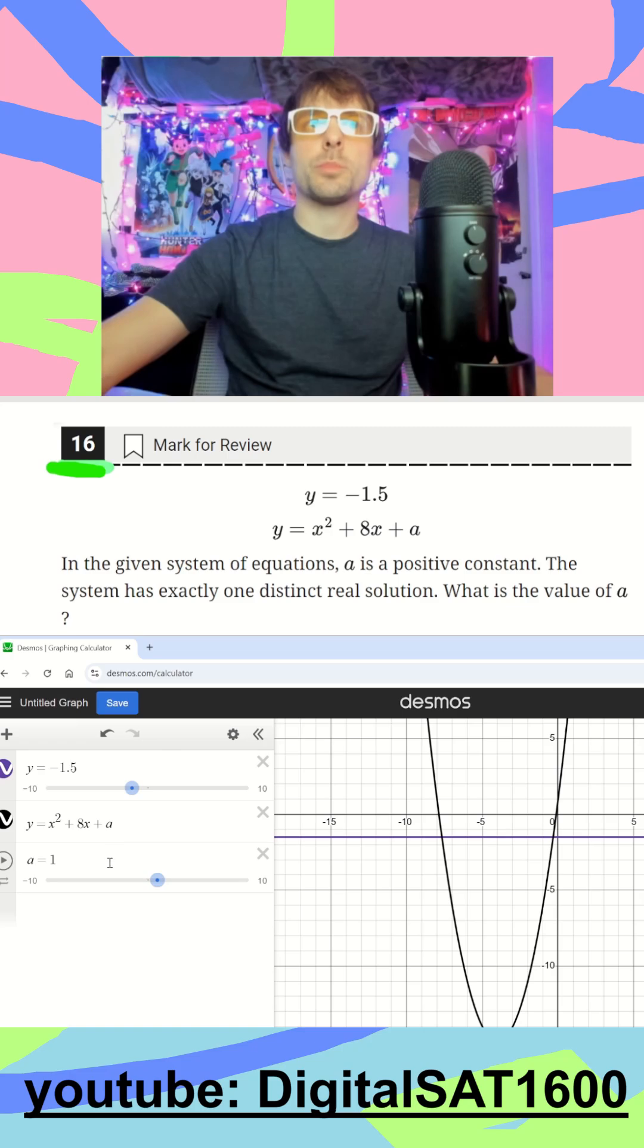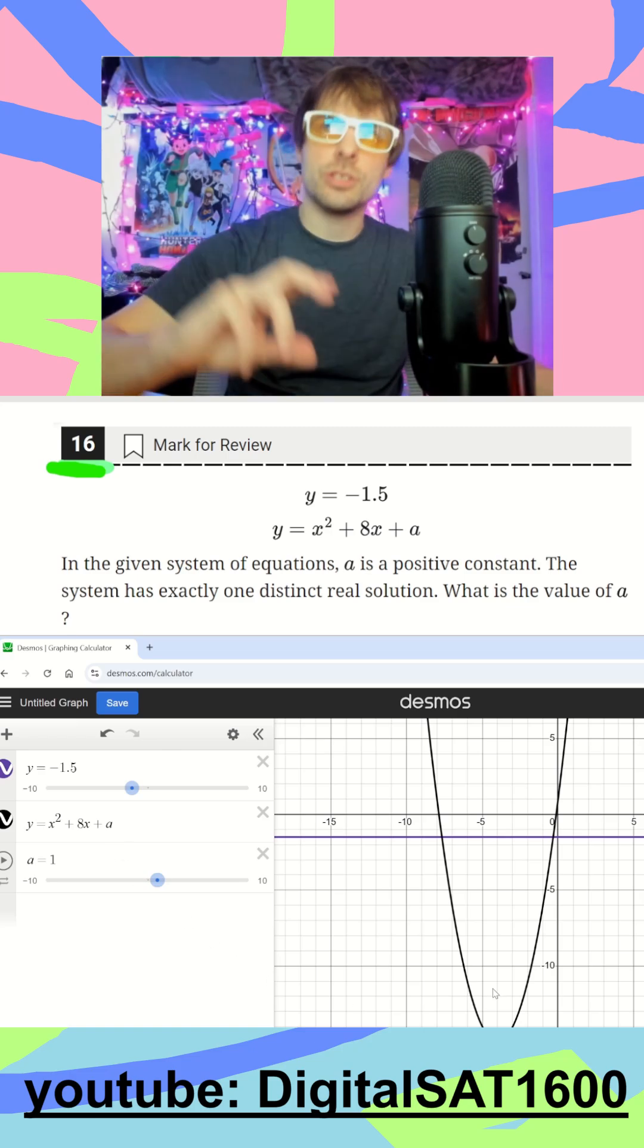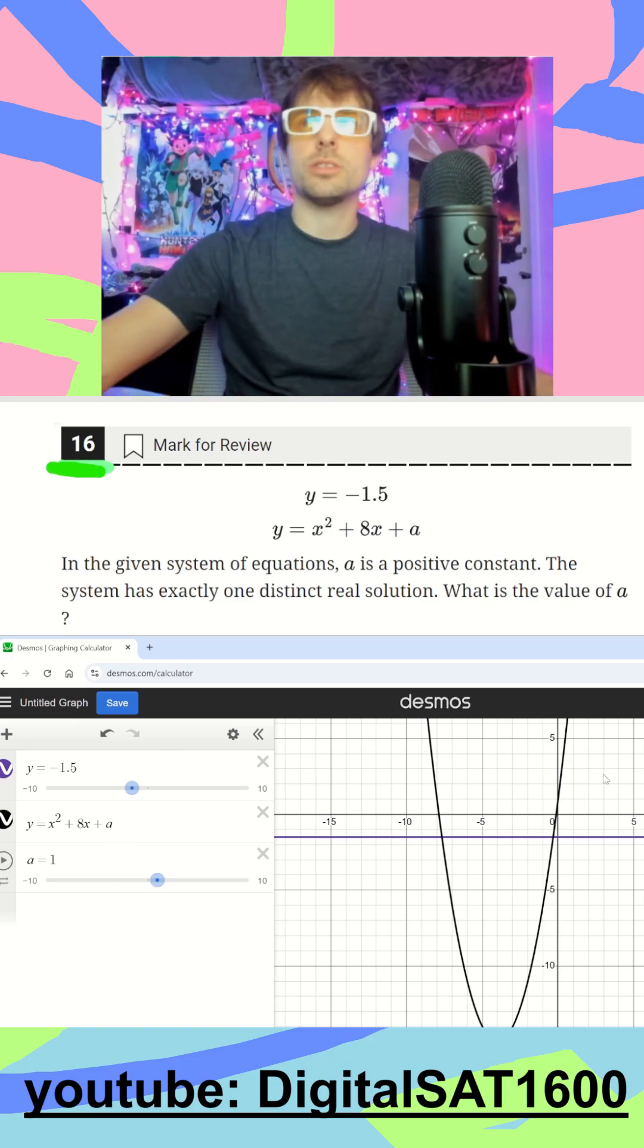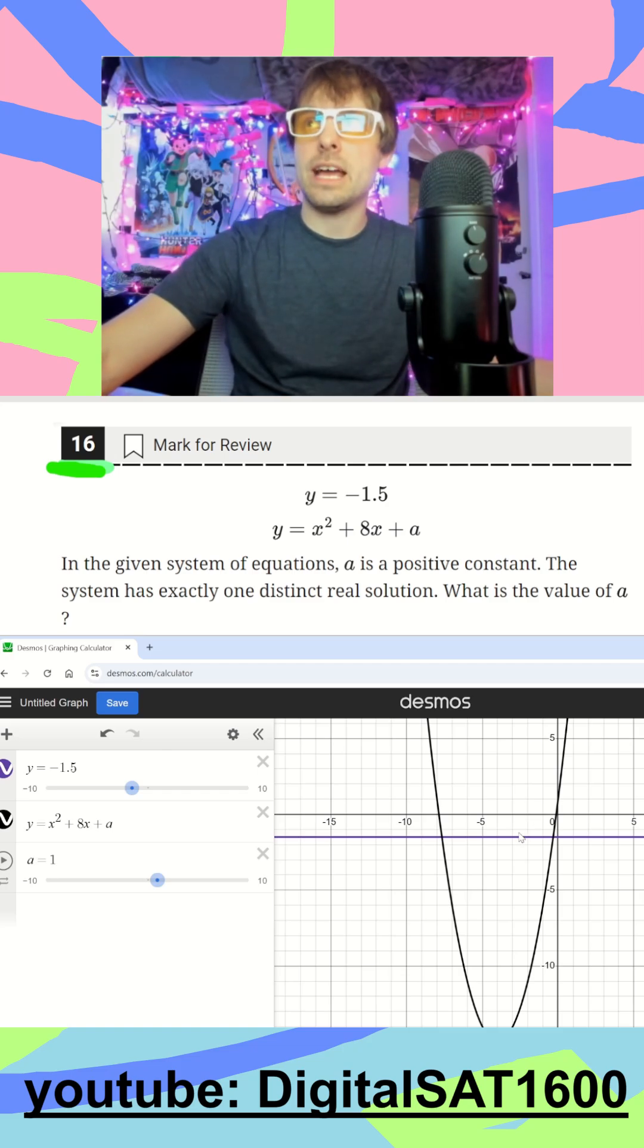So usually when we have a parabola and they want the two solutions, the one solution, or no solutions, we're focused on our x-axis here. But since we do have a second line, our solutions turn into intersections with this line. So we use the same strategy.